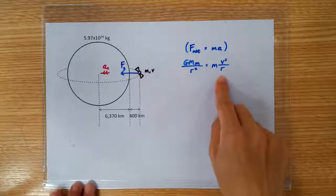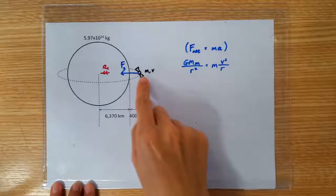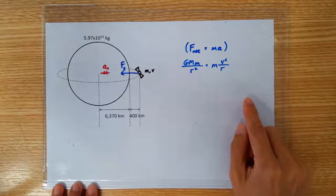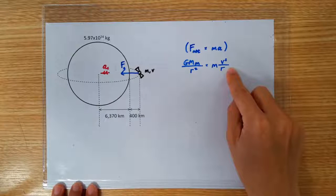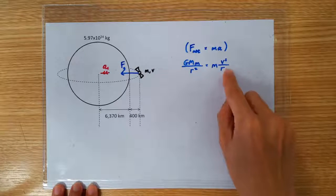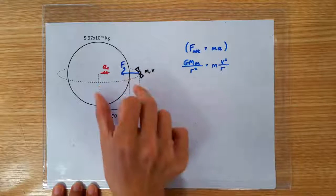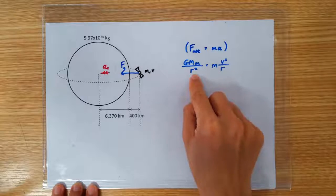On the right-hand side, we need m times a. The acceleration of the satellite is a centripetal acceleration, so we can write that as v squared over r. What we need at the bottom here is the radius of the circular motion, which turns out to be the same r as this r.